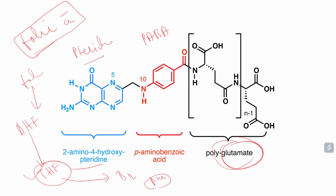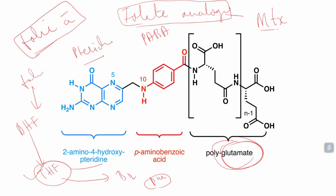In today's topic we are discussing folate antagonists, or folate analogues. In folate analogues, one very famous drug is methotrexate. Methotrexate's chemical structure is very similar to folic acid — that's why it is called a folate analogue. Just as we have purine and pyrimidine analogues, methotrexate is a folate analogue.